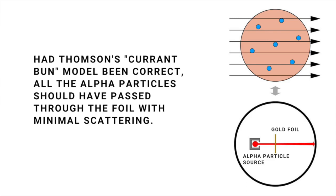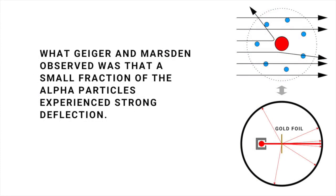If the current bun model were right, every one of the alpha particles ought to zip straight through the foil in Geiger and Marsden's experiments, suffering at most minor deflections because of the weak influence of the spread out positive charge.